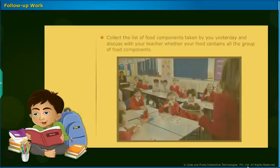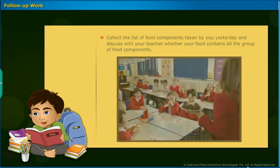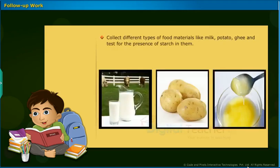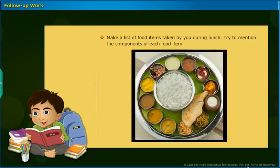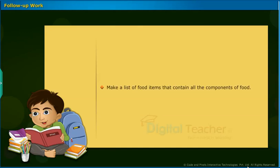Follow-up activities: collect the list of food components taken by you yesterday and discuss with your teacher whether your food contains all the groups of food components. Collect different types of food materials like milk, potato, and ghee, and test for the presence of starch in them. Make a list of food items taken by you during lunch and mention the components of each food item. Prepare khichdi with your mother's help using all available vegetables, dals, nuts, etc., and write a note on the process of making khichdi. Make a list of food items that contain all the components of food.